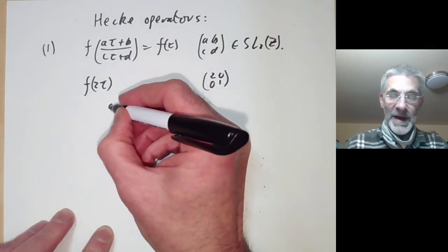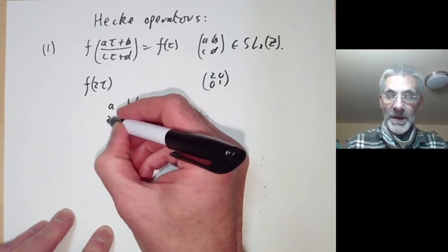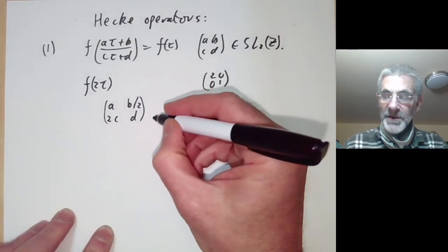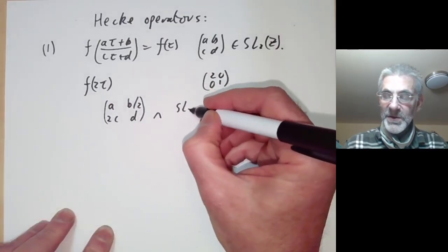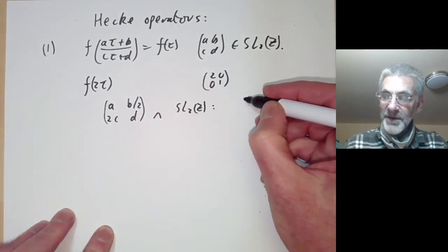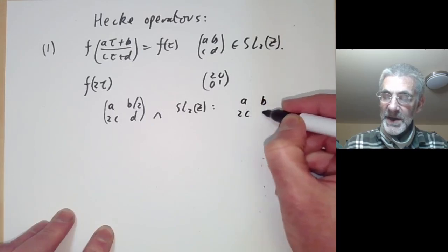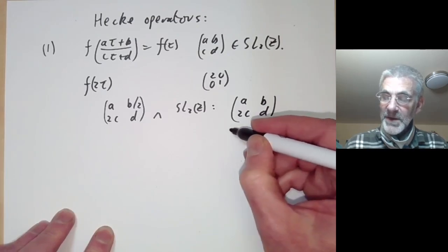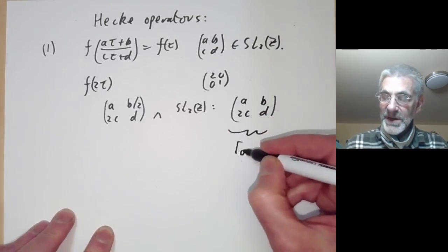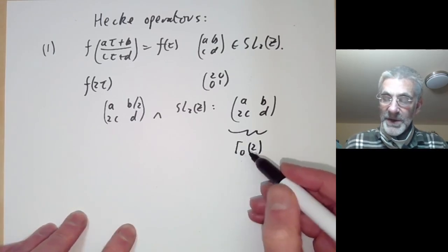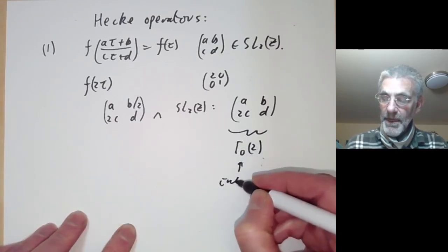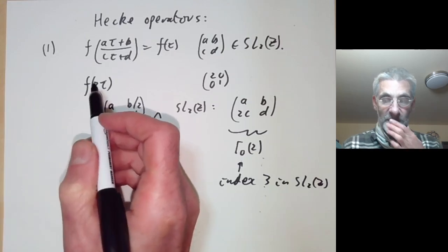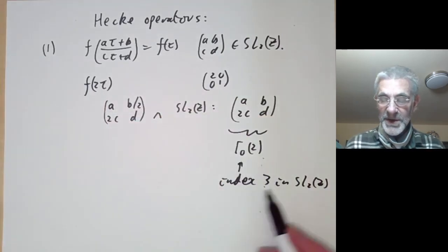In other words, f(2τ) is invariant under the group of matrices of the form (a b/2; 2c d). The intersection of this with SL₂(ℤ) consists of all matrices of the form (a b; 2c d), meaning the lower-left entry is even. These matrices form a group called Γ₀(2), and Γ₀(2) has index three in SL₂(ℤ). So this function isn't quite invariant under SL₂(ℤ), but it's invariant under a subgroup of index three.